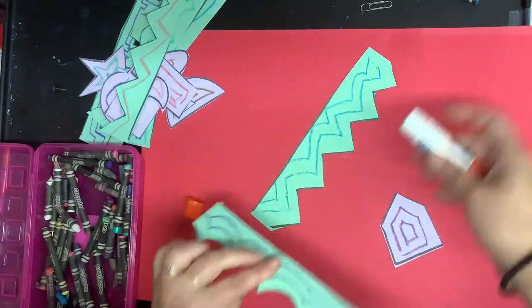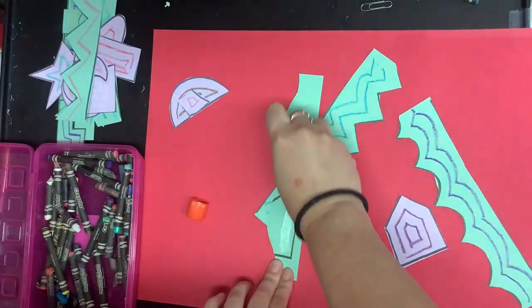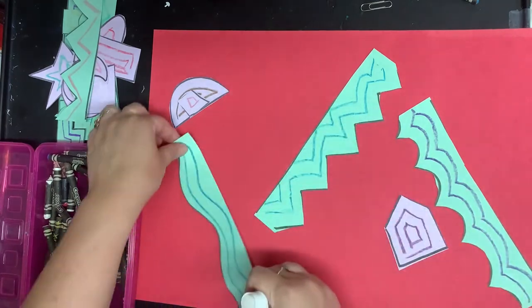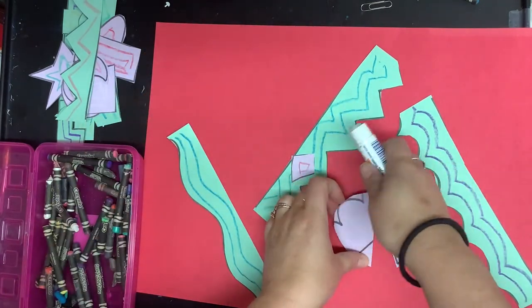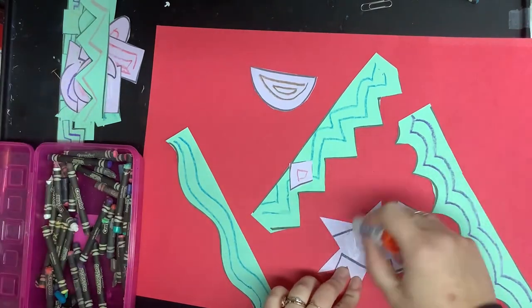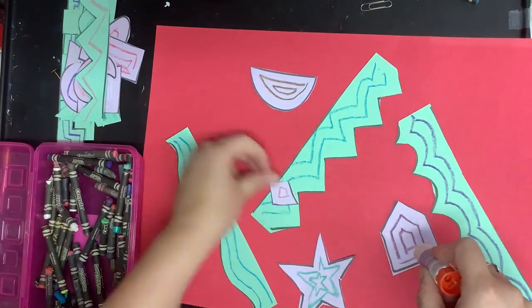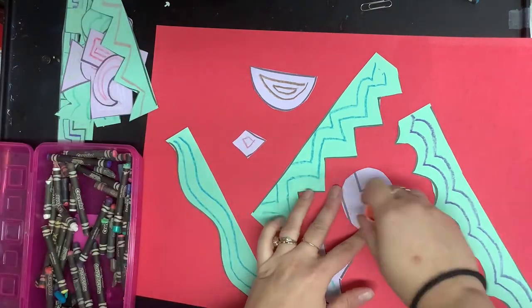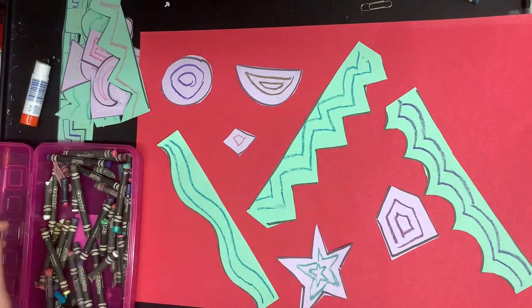You can decide wherever you want to glue things down but I don't want you to overlap any of your pieces. So you can see that I'm spreading them out on my big piece of red paper and I'm just making sure that they're ending up in places separate from the other pieces. I don't want anything overlapping. I want them to all be in their own separate areas.